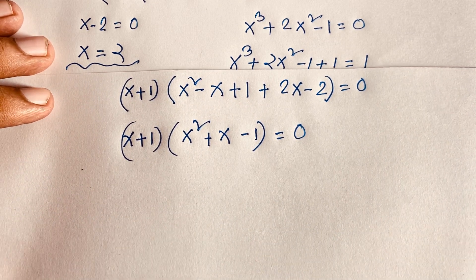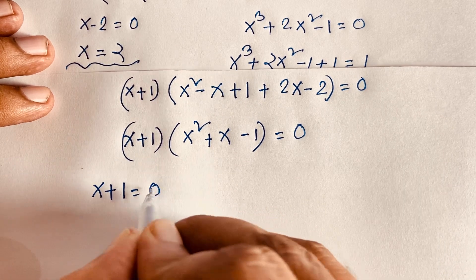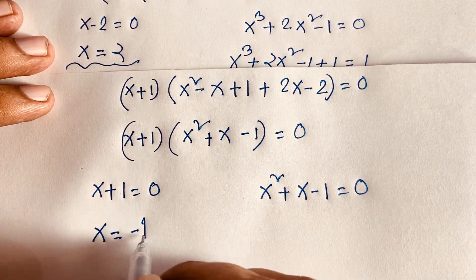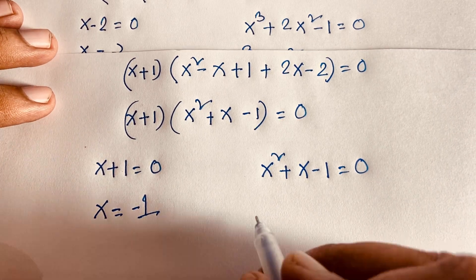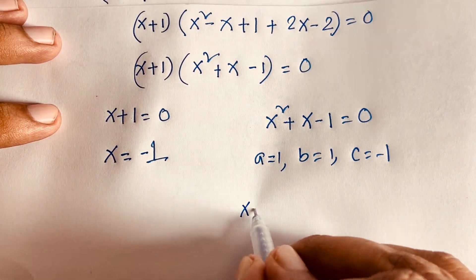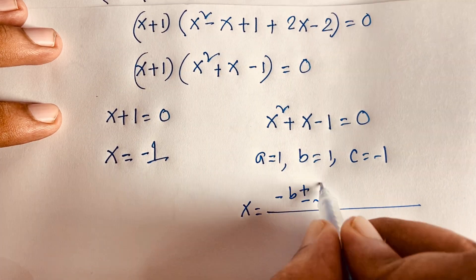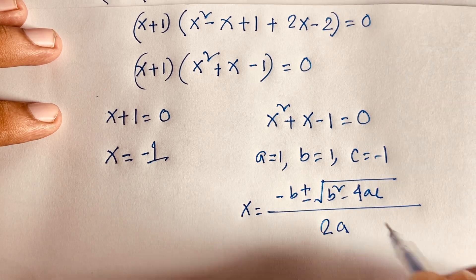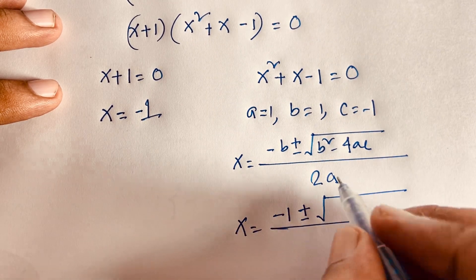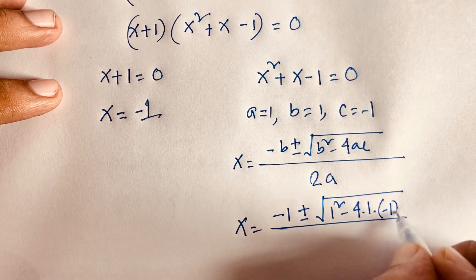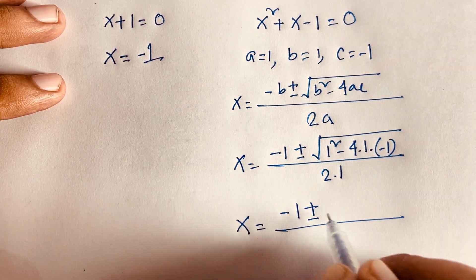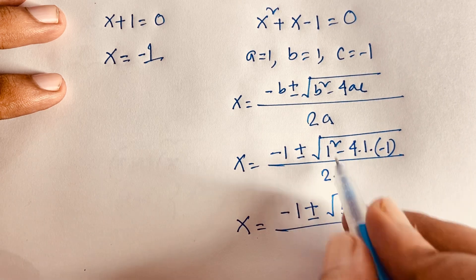We now have two more cases. Case 1: x + 1 = 0, giving x = -1. Case 2: x² + x - 1 = 0, where a = 1, b = 1, c = -1. Using the quadratic formula x = (-b ± √(b² - 4ac)) / 2a, we get x = (-1 ± √(1 + 4)) / 2 = (-1 ± √5) / 2.